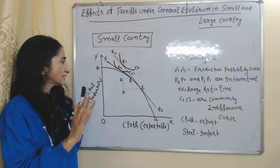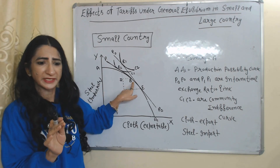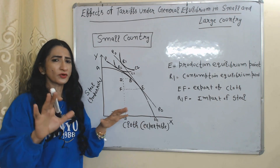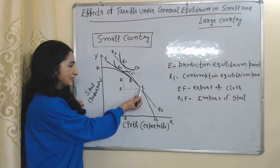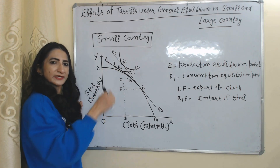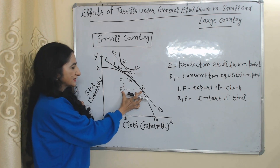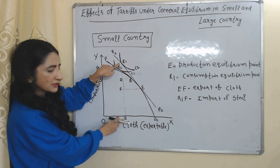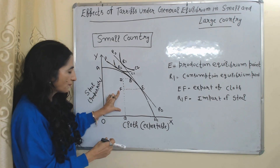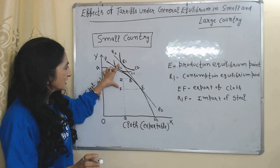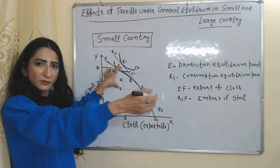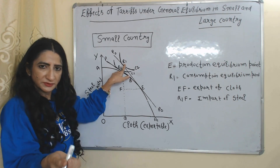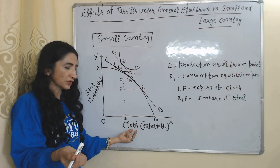When country A is not doing any kind of trade, the equilibrium point is B. Now suppose international trade starts and initially trade is free with no tariff. Then the production equilibrium point is E and the consumption equilibrium point is R1. Country A is doing export of cloth equal to EF, and total consumption of steel is equal to R1Q, of which FQ is produced domestically and the remaining R1F is imported.